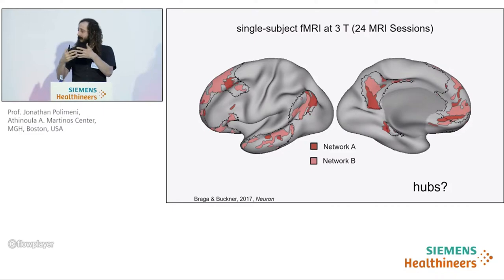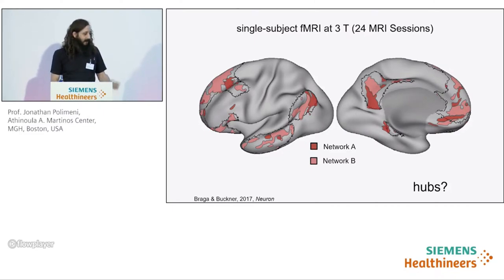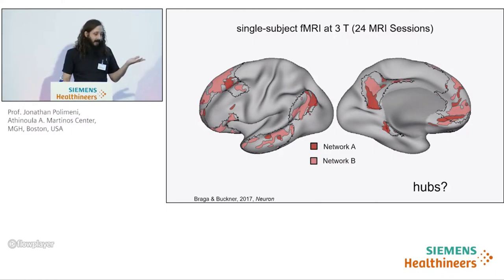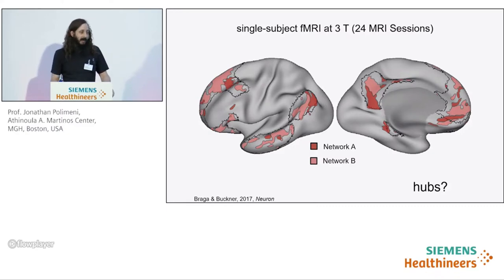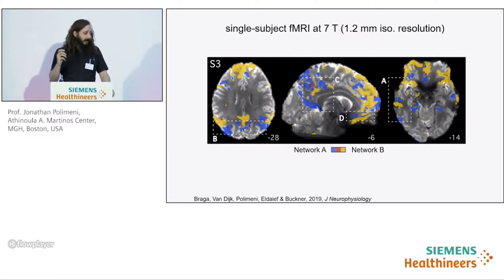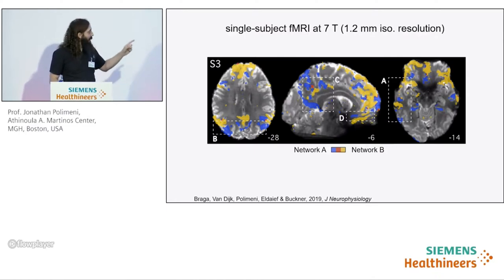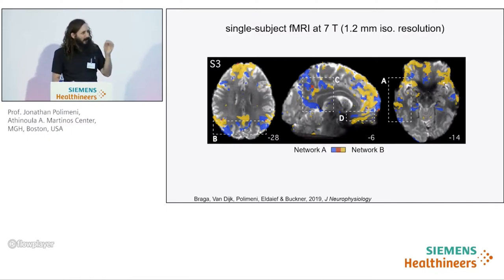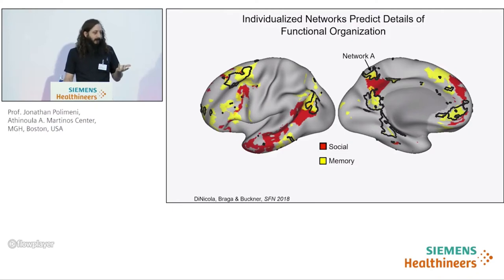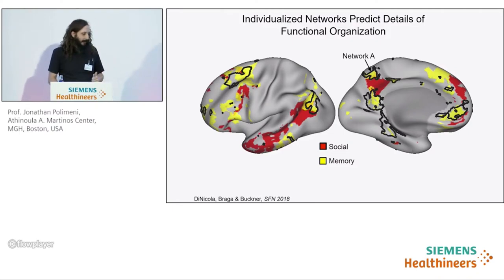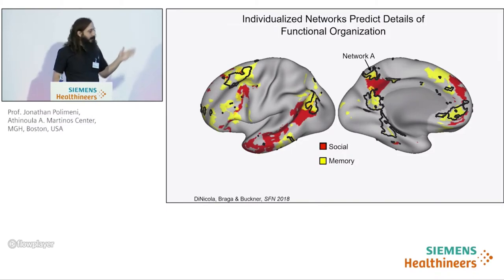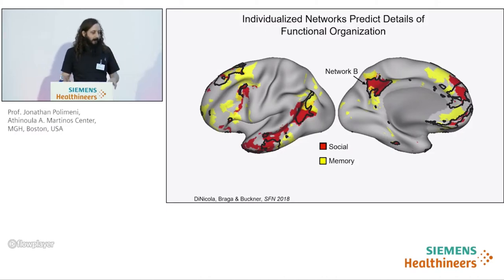These two networks were identified consistently using both surface-based and volume-based analysis, following best practice methods for high-resolution MRI. They can also be seen in individual subjects from a single experimental session at 7 Tesla, showcasing 7 Tesla's ability to provide sufficient sensitivity for single-subject fMRI studies. To understand the functional roles of these two networks, Randy's group presented several tasks of high-level cognition including tests tapping social function and tests tapping memory. Default network A overlaps strongly with responses to memory tasks, and default network B overlaps strongly with responses to social function.